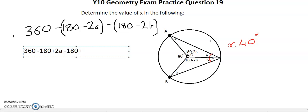If I look at this, 360, take away 180, take away 180, that cancels out. That leaves me with my 2A plus 2B.